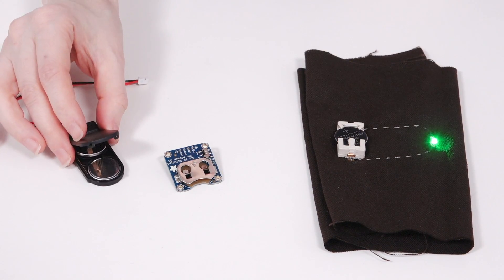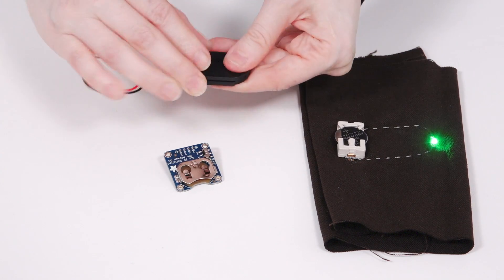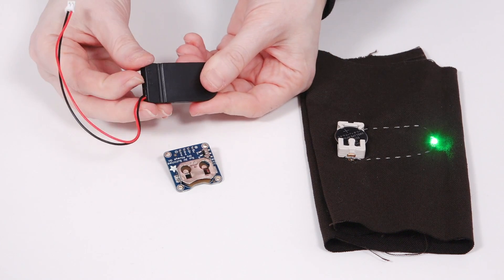We even have this really nice double cell holder that gives you a 6 volt output, comes with a JST connector and a nice on-off switch.